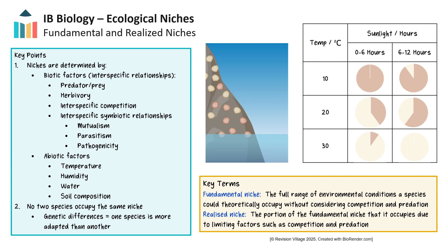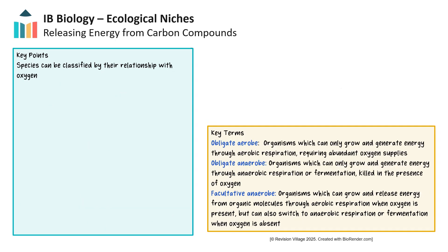The way a species obtains nutrients and energy is also a part of its niche, and we'll find there is a wide range of modes of nutrition for different organisms. When considering how organisms harness energy and obtain nutrients, one classification is based on how they release energy from carbon compounds, either with or without oxygen.